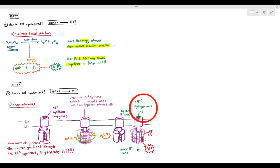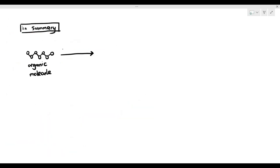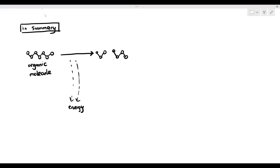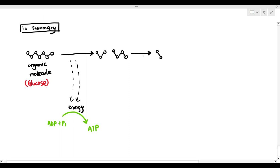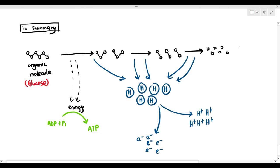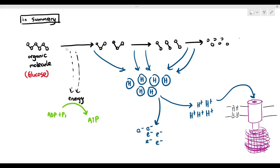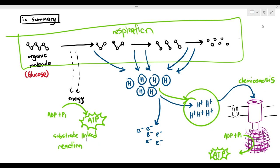Where does hydrogen ion come from? Respiration is the breakdown of molecules. So when the organic molecule, for example glucose, is broken down, the organic molecule releases some energy, and that energy is used to join phosphate and ADP together to make ATP — that is substrate-linked reaction. But the breakdown of the organic molecule like glucose will also release hydrogen atoms, and those hydrogen atoms will eventually split to become hydrogen ions, which are used to power the ATP synthase and thus produce ATP.